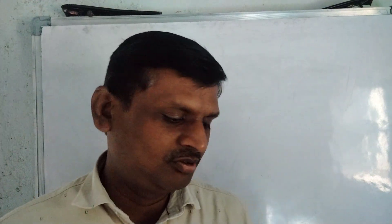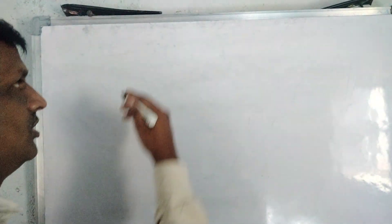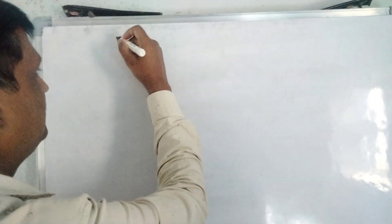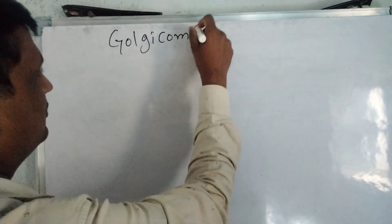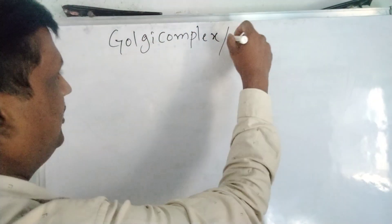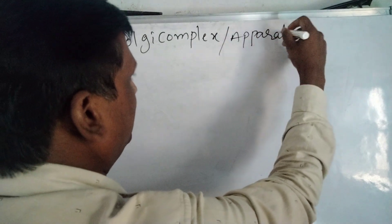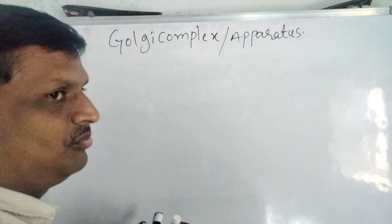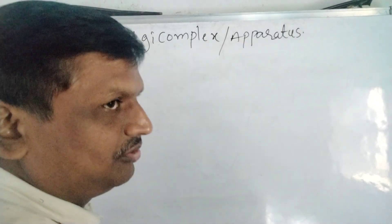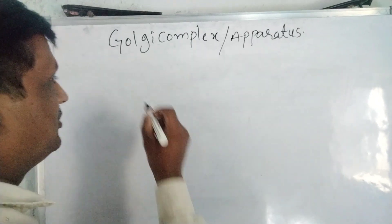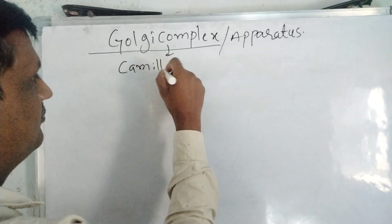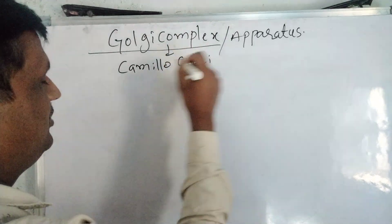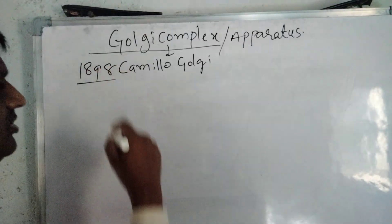Welcome back to our YouTube channel Biotech. Today we are going to study about another cell organelle — the Golgi complex, also called the Golgi apparatus. This is an important cell organelle. The Golgi complex was discovered by Camillo Golgi in 1898.